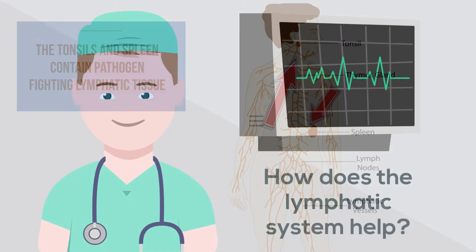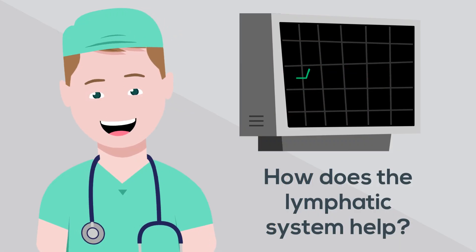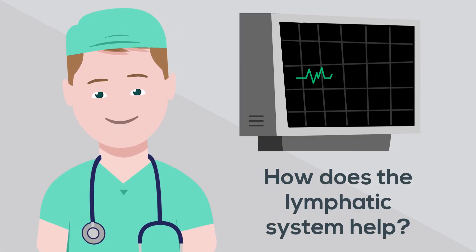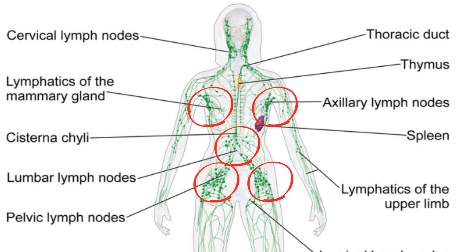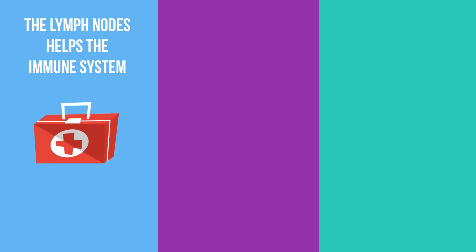So how does the lymphatic system help you? First, the lymph nodes are responsible for filtering lymph and providing part of the immune response to new pathogens. Lymphocytes found at these nodes help fight the pathogens that are found in the lymph.